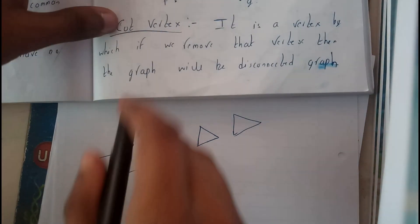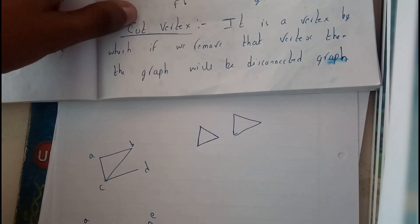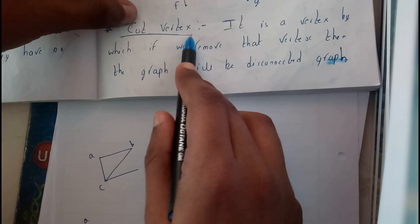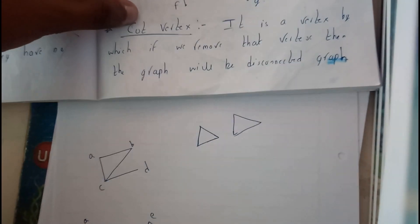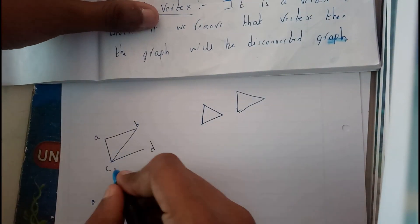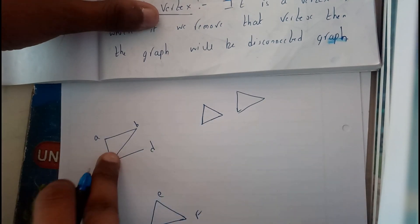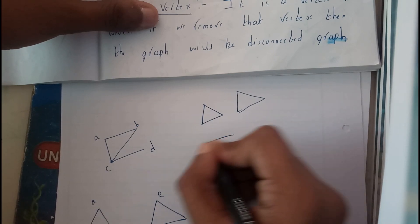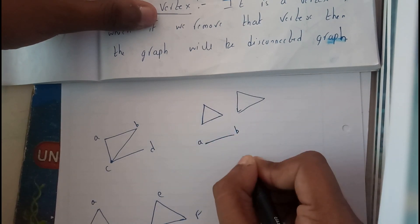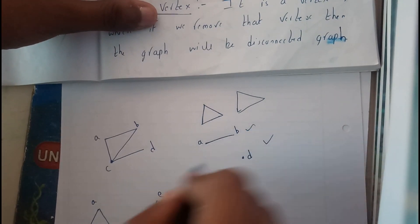To be clear, a cut vertex will be if we remove a particular vertex then the graph should be disconnected. Let us take the first example. In this, if we remove c, I assume that there is no c, then the graph will be something like this: a to b and g to ld. Hence it became a disjoint graph.